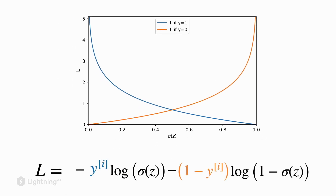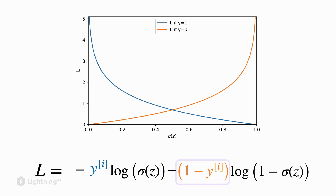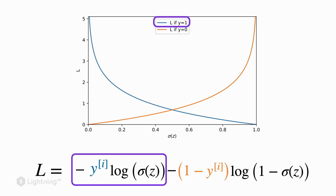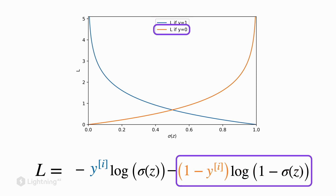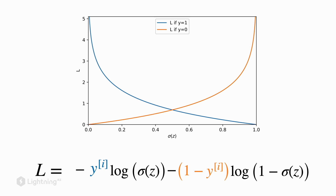We can combine these two parts into a single formula that we apply to training examples. On the left-hand side we have yi, the class label of the current training example i, and on the right-hand side we have 1 minus yi. These terms switch between the two parts of the formula. If the true class label is 1, the left-hand side is active and the right-hand side is cancelled, since 1 minus 1 equals 0. If the true class label is 0, the left-hand side is cancelled because 0 times log equals 0, activating the right-hand side. Using this formula, we can toggle between the two cases.